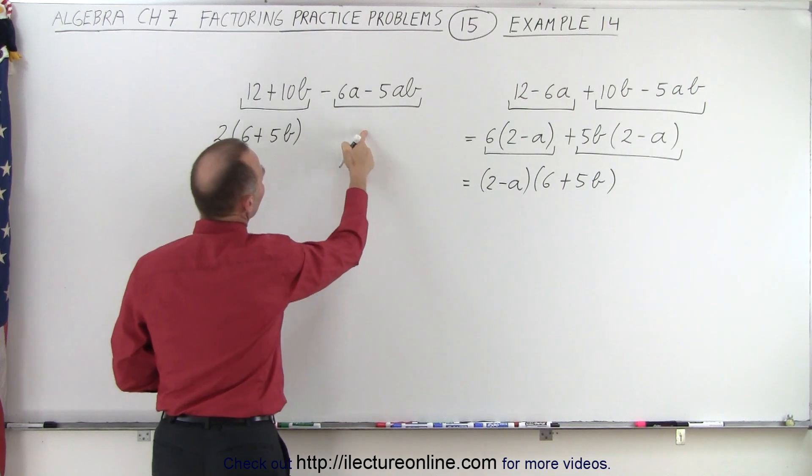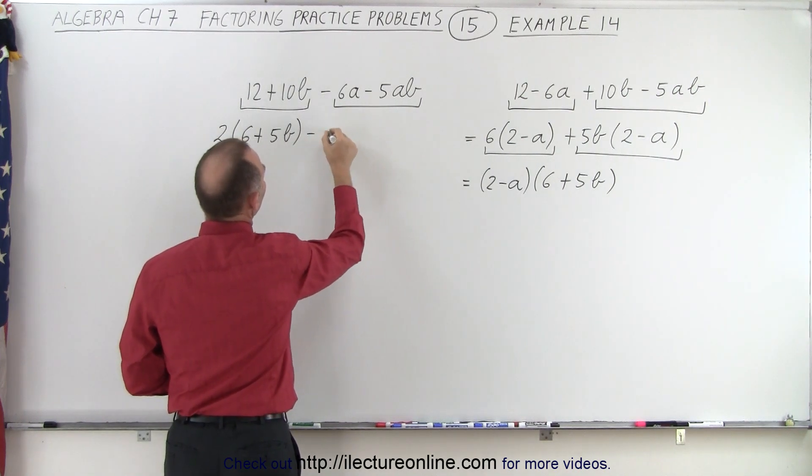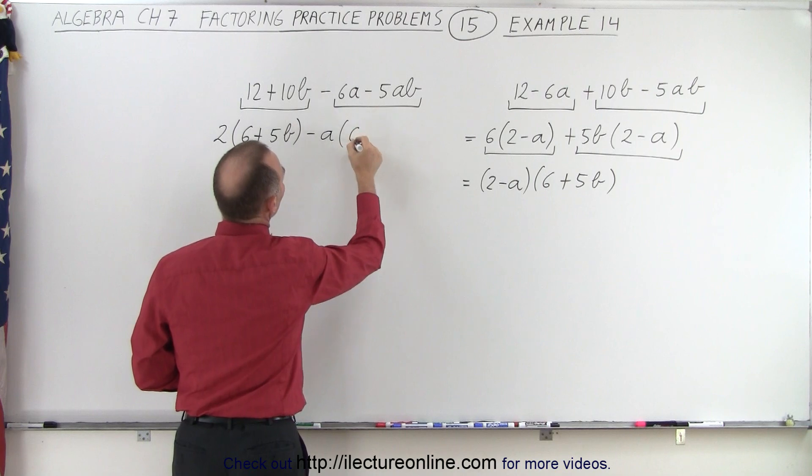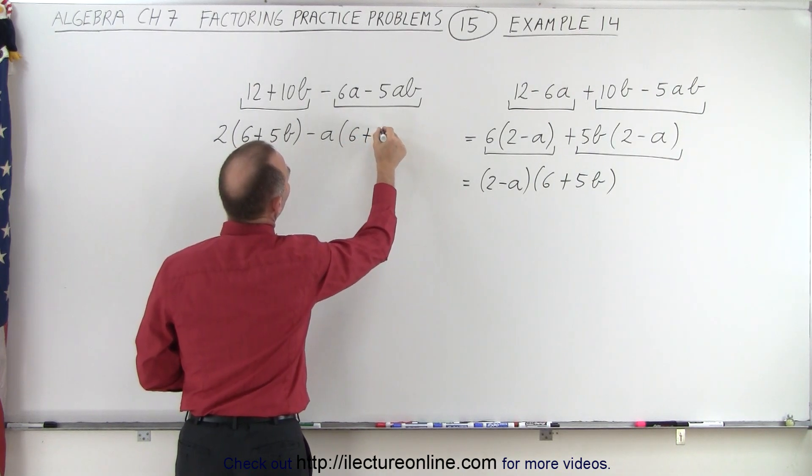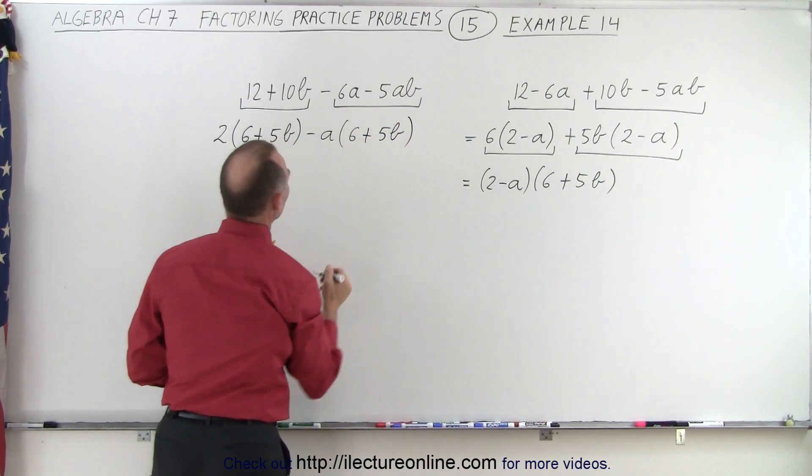And here, I can factor out a minus A, minus A. And I'm left with a 6 plus 5B.